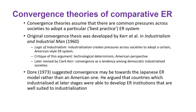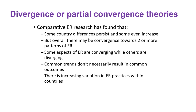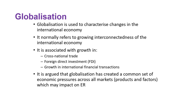Dore in 1973 suggested convergence may be towards the Japanese employment relations model rather than the American one. Divergence or partial convergence theory found that country differences persist or even increase over time, though there may be convergence towards a more common pattern overall. Some aspects of employment relations are converging while others diverge — common trends do not necessarily result in common outcomes. There is increased variation in employment relations practice within countries as they shift from five-day to four-day weeks and flexible timing.